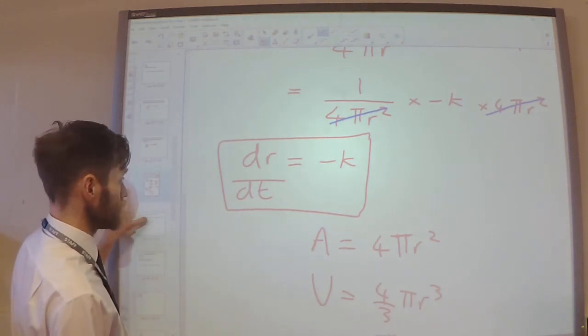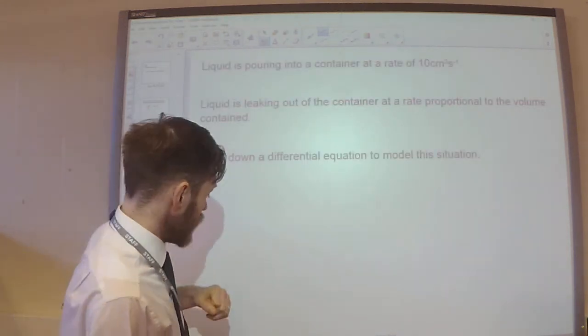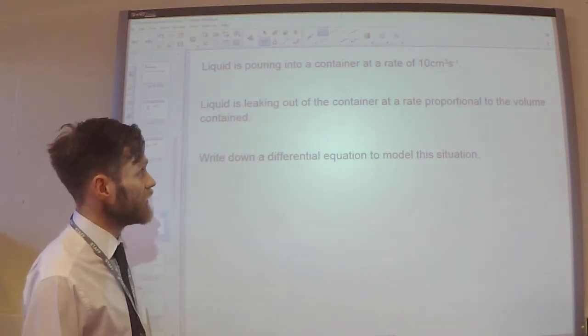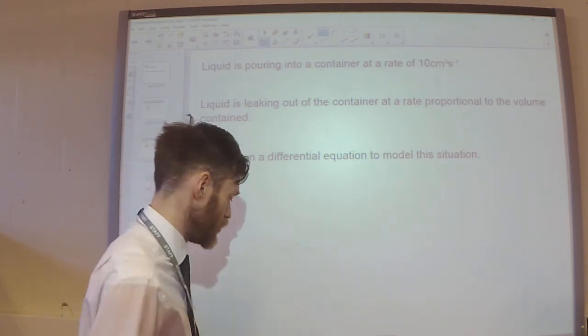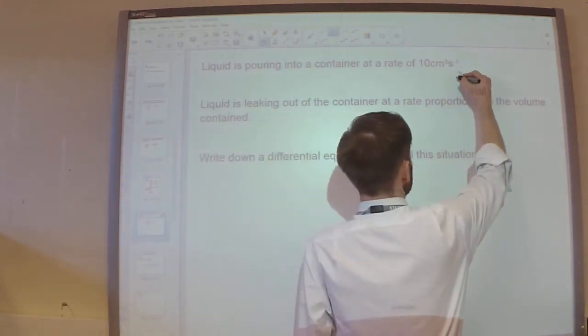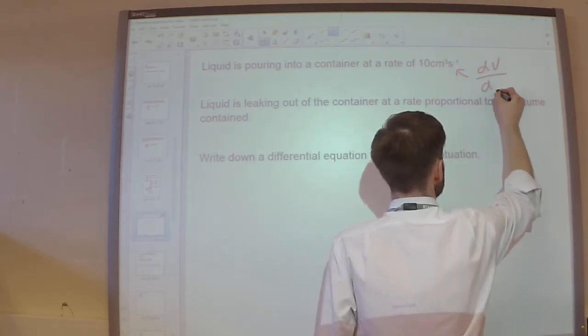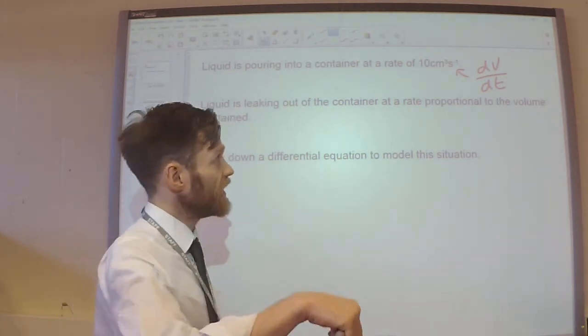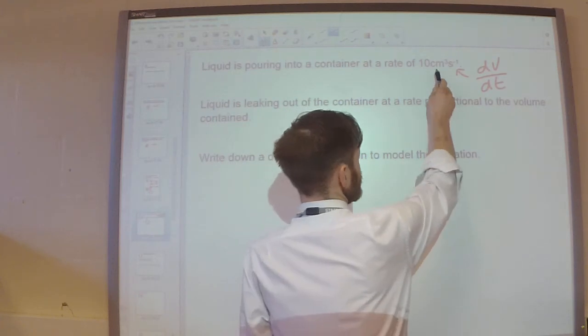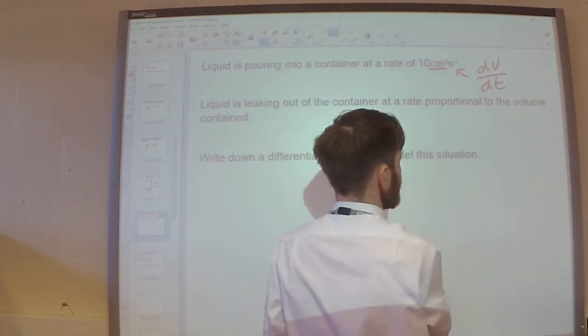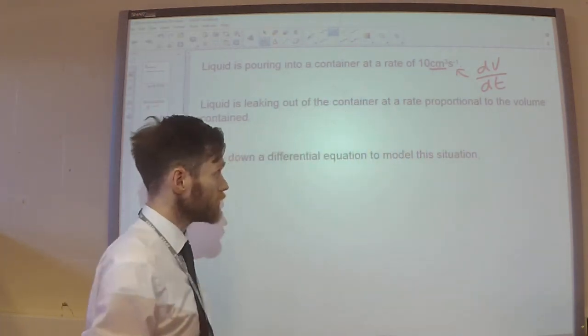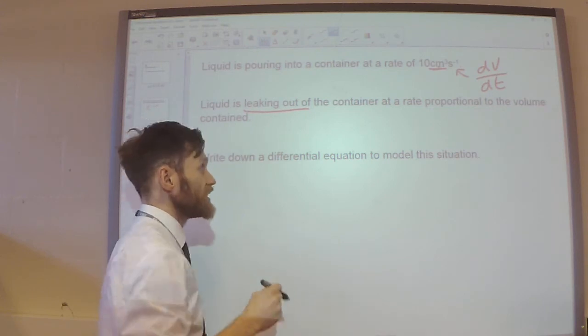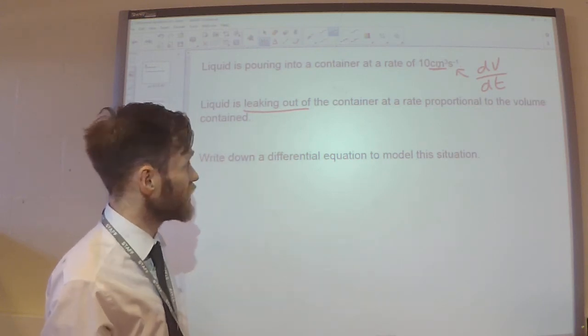One more example. We have liquid pouring into a container at a rate of 10 centimeters cubed per second. So, I've got dv by dt there. So, liquid's pouring in at 10 centimeters cubed per second. Again, look at the unit, volume per second.